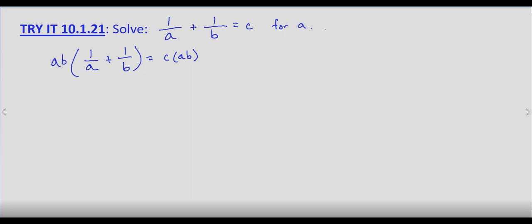We also want to note that a cannot equal 0, and b cannot equal 0. Because if we did, we'd end up with a denominator that's 0.